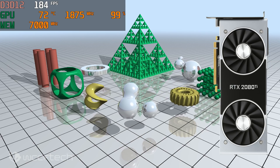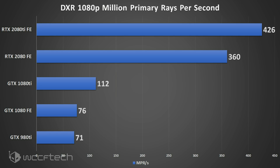The first graph shows MPR per second — million primary rays per second — the metric measured in the demo. Something really impressive here: the GTX 980 Ti (this is the EVGA GTX 980 Ti SC ACX 2+ model, so slightly overclocked above reference) is pushing 71 million primary rays per second. The GTX 1080 only goes up to 76.